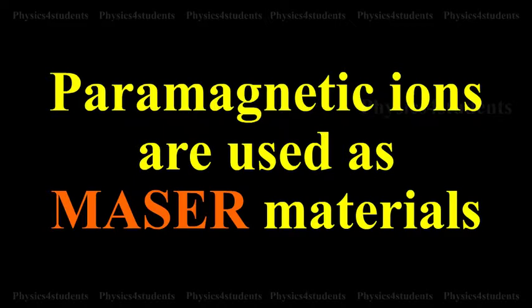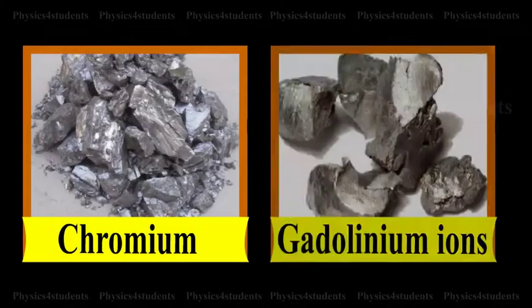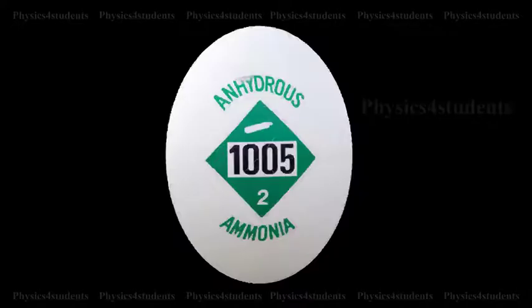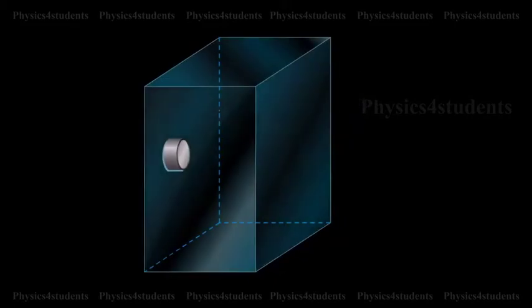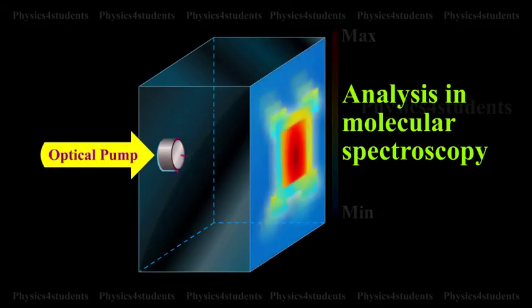Practical MASER materials are often chromium or gadolinium ions doped as impurities in ionic crystals. Ammonia gas is also a MASER material. MASER provides a very strong tool for analysis in molecular spectroscopy.